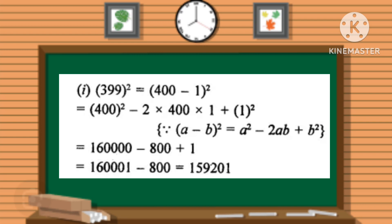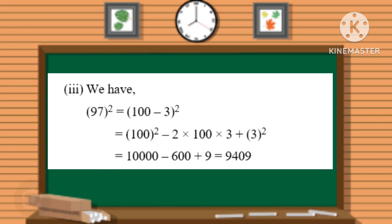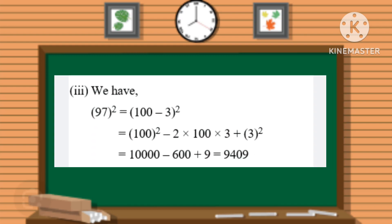Same as another example is there: 97². We have to break it up into (100 - 3)².